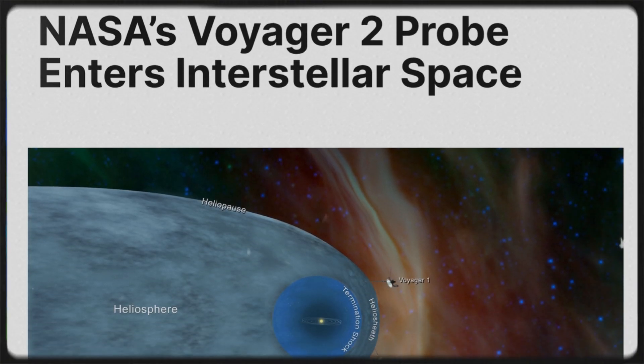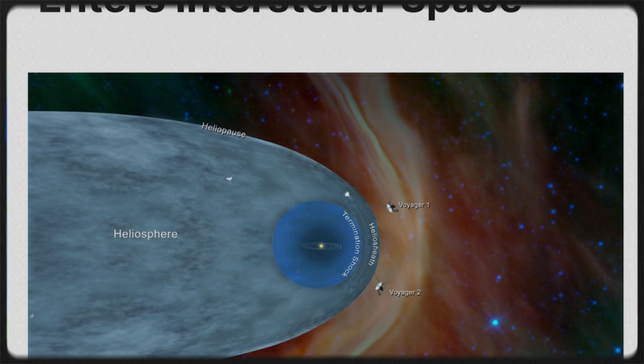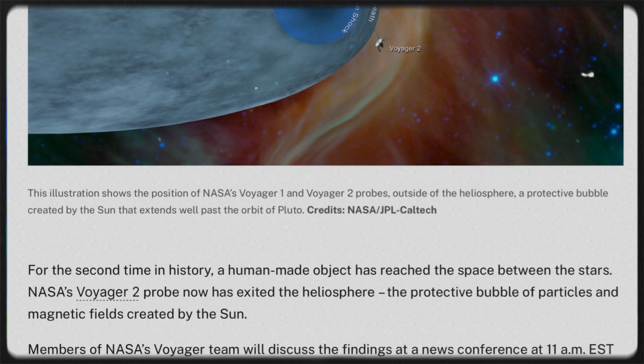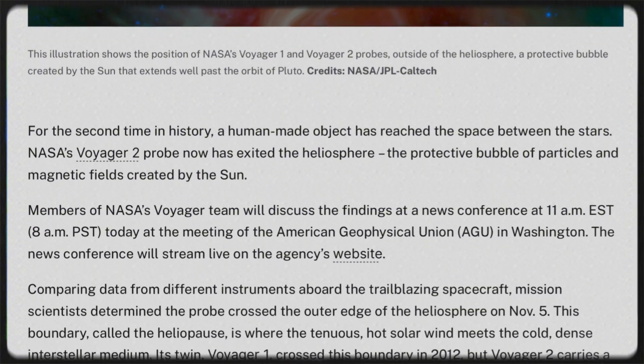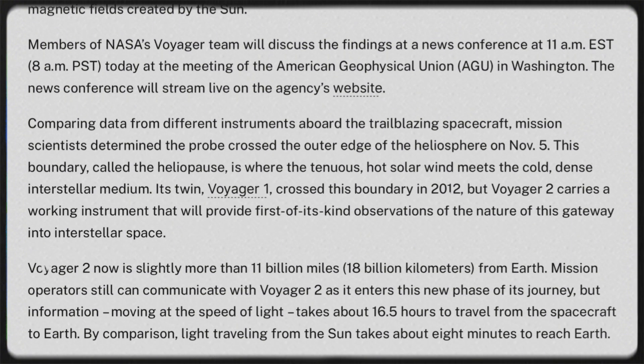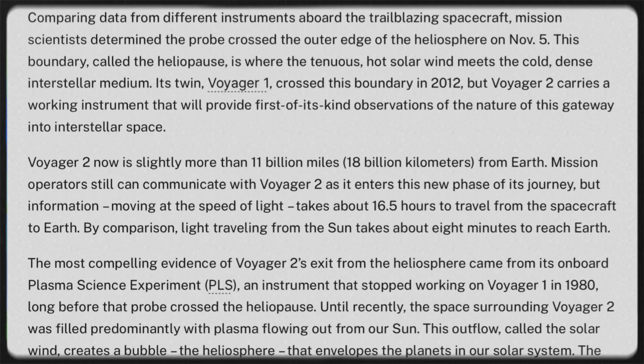In November 2018, Voyager 2 reached the interstellar boundary, but it did not detect any changes in the magnetic field. When the spacecraft arrived at the heliopause 120 AU from Earth, the same distance its twin had reached six years earlier, it presented another puzzle.